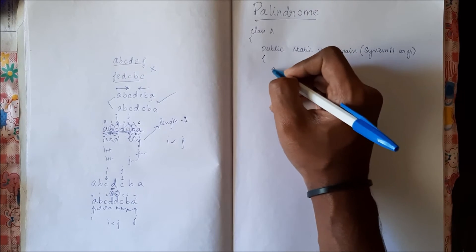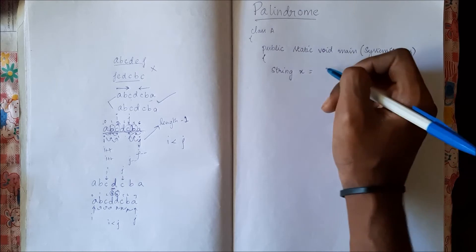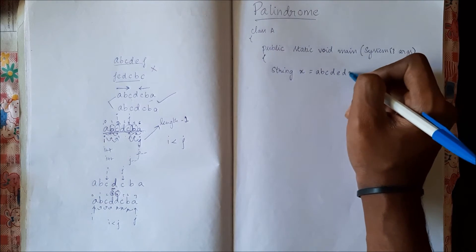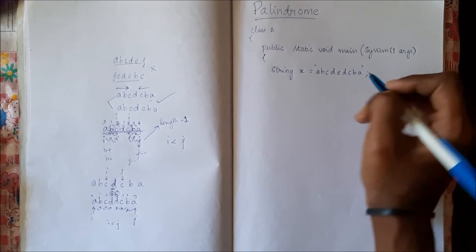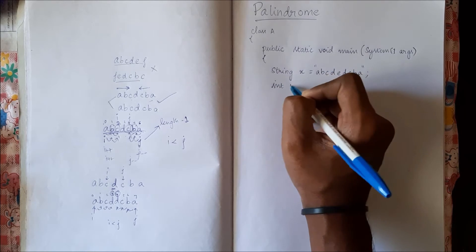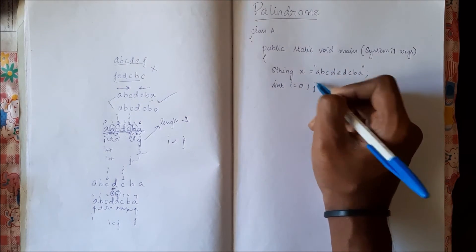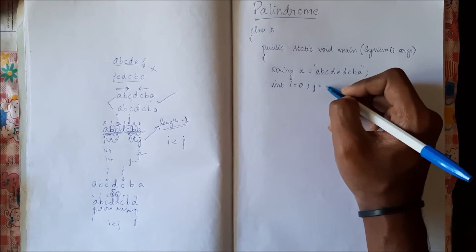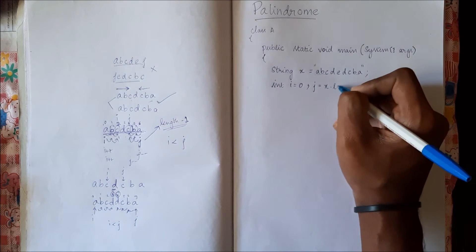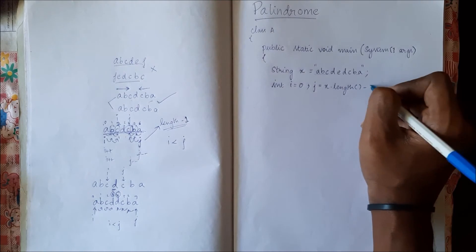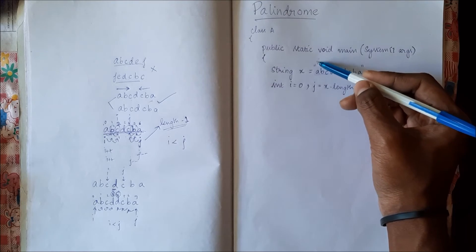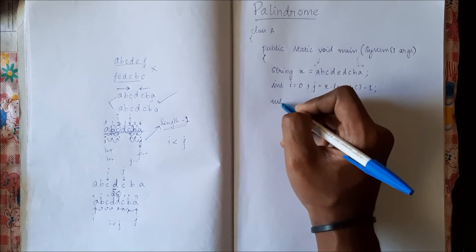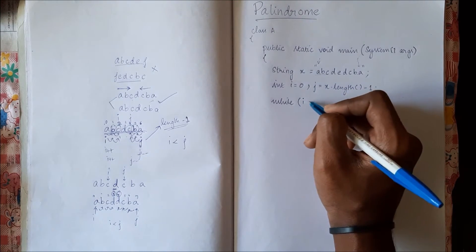Now let us code this. We first need a string variable x with some string value. We need i starting from zero, and we need j which will start from the length of the string minus 1, so j equals x dot length minus 1. We have placed i at the start and j at the end, and now we run a while loop which checks that i is less than j.